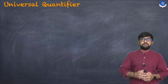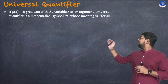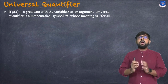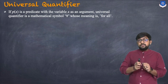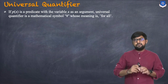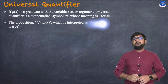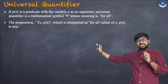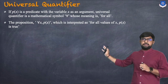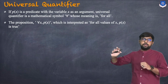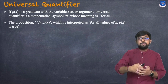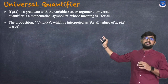We will have two quantifiers. The first is the universal quantifier. If P(x) is a predicate with variable x as an argument, the universal quantifier is the mathematical symbol '∀', meaning 'for all'. The proposition '∀x, P(x)' is interpreted as: for all values of x, P(x) is true.